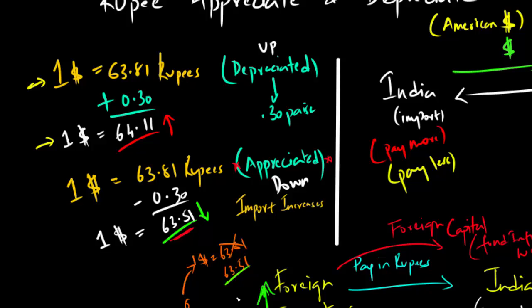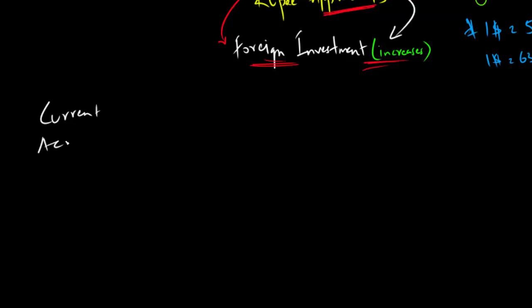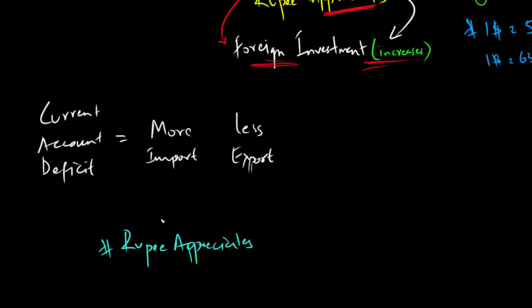If we take the previous example, the value of rupee after appreciating was 63.51 rupees, which is lesser than 63.81 rupees. That means exporters will earn lower revenue and that will discourage exporters to export goods. Now if a country is importing more than what it is exporting, that will create a current account deficit. So you see, on one hand, if the rupee appreciates or becomes stronger, foreign investment increases, and on the other hand, export decreases.